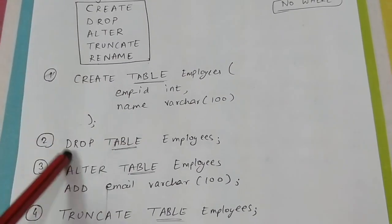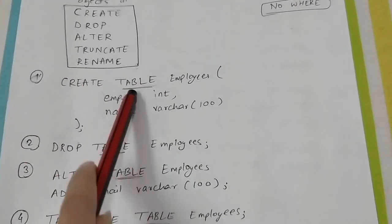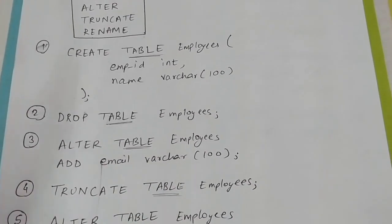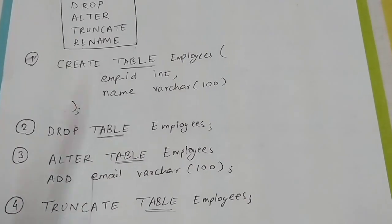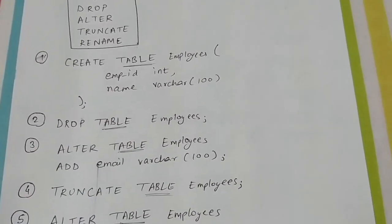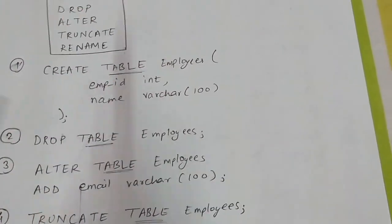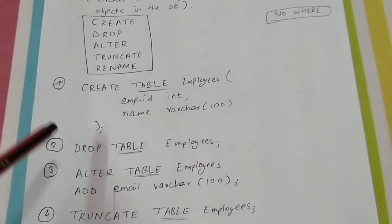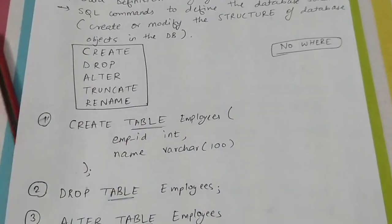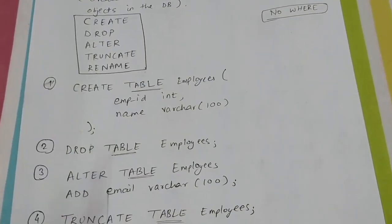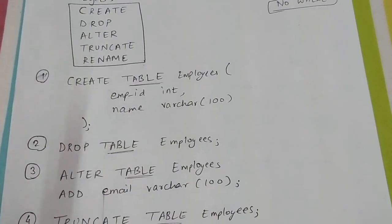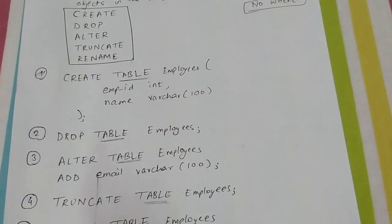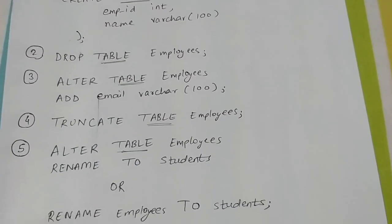Two things to remember about DDL commands: first, they always include the word TABLE — CREATE TABLE, DROP TABLE, ALTER TABLE, TRUNCATE TABLE. Second, there is no WHERE clause in DDL commands. Unlike INSERT, UPDATE, or DELETE queries where you write WHERE, in data definition you do not use WHERE.